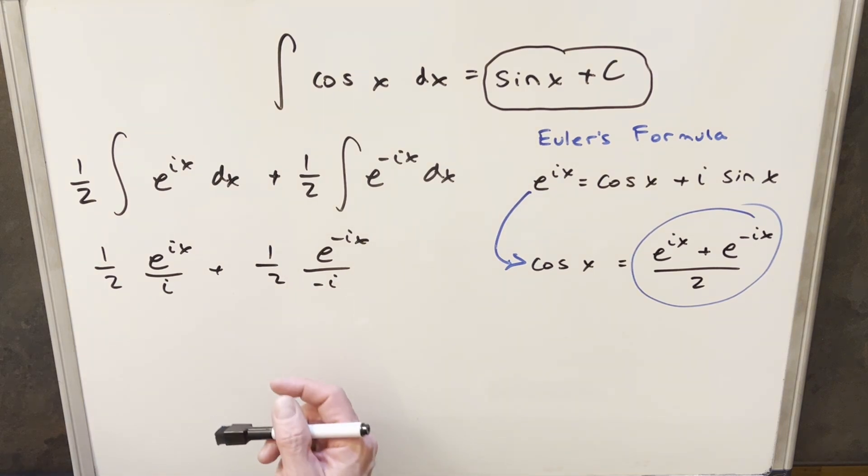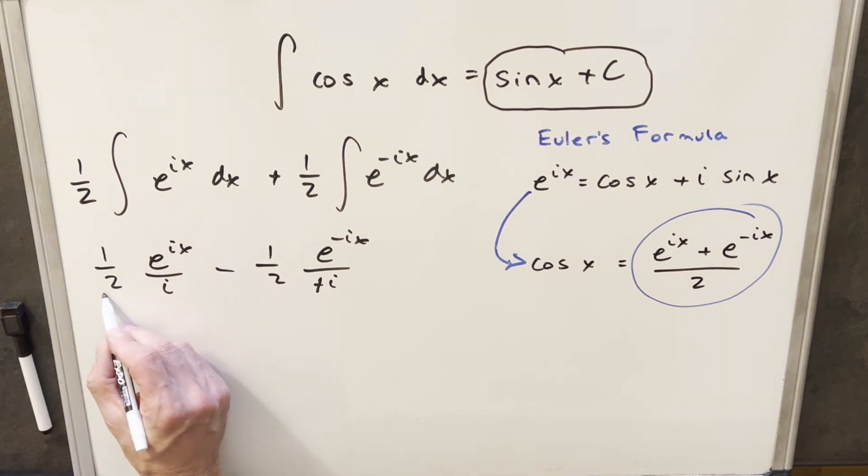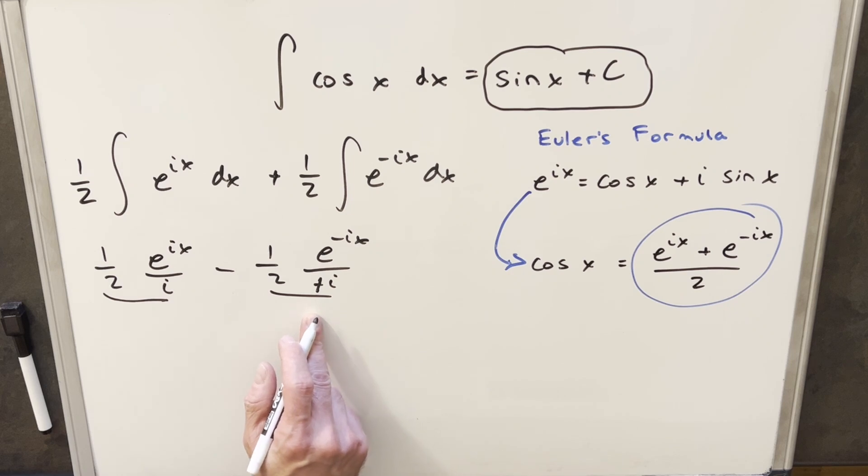But next thing we'll do is I'm just going to take this minus sign and turn this into a plus and bring the minus up front and write it right here. And so then now having 2i here and 2i here, we have a common denominator. So I'll just put these together. So we'll have this all over 2i. And then in the numerator, we're just going to have e^(ix) minus e^(-ix).